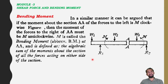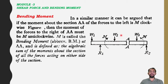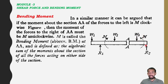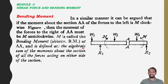Then comes bending moment. In a similar manner, if the moment about section AA of the forces to the left is M clockwise, then the moment of forces to the right of AA must be anti-clockwise. M is called the bending moment, abbreviated BM at AA, and is defined as the algebraic sum of the moments about the section of all forces acting on either side of the section.